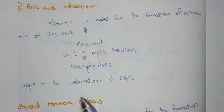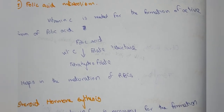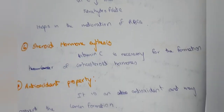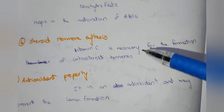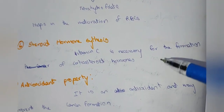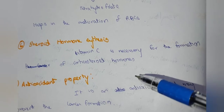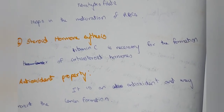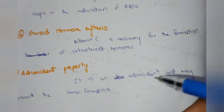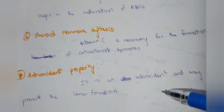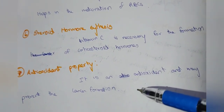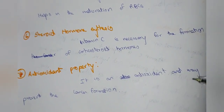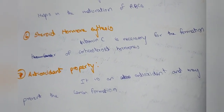Tetrahydrofolate helps in the maturation of red blood cells (RBCs). Vitamin C is also necessary for the synthesis of corticosteroid hormones. Additionally, it has antioxidant properties and may help prevent cancer formation.